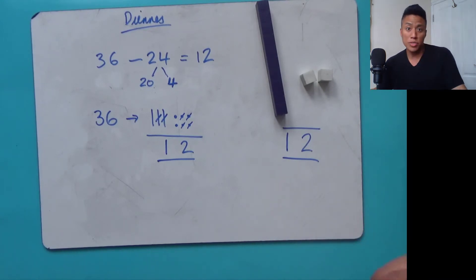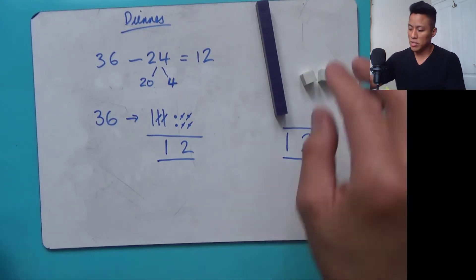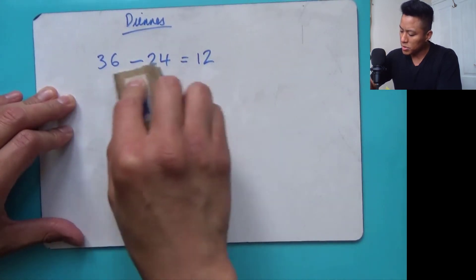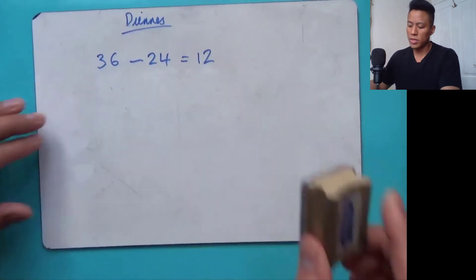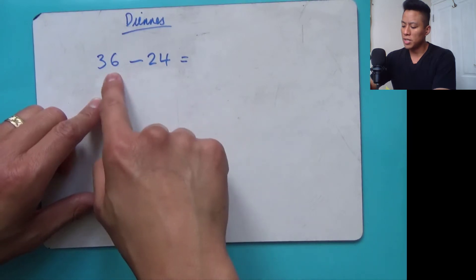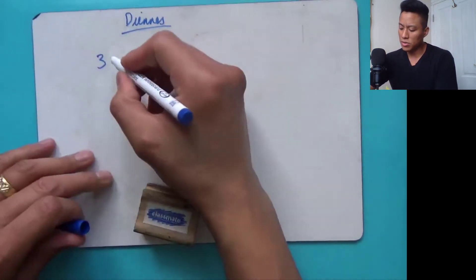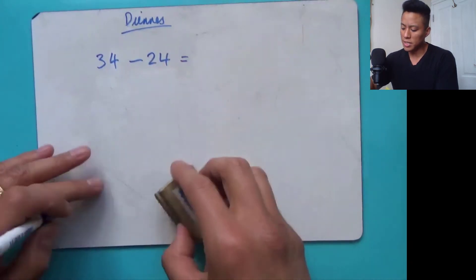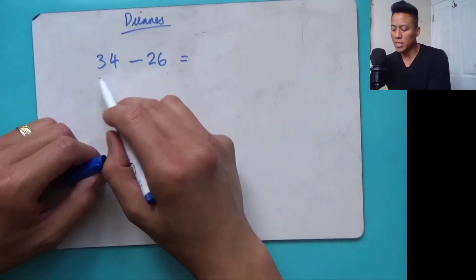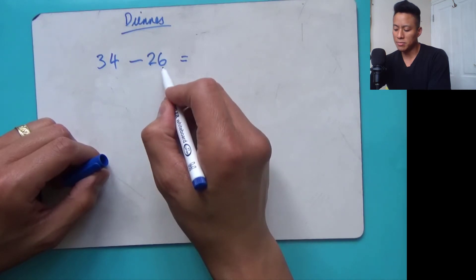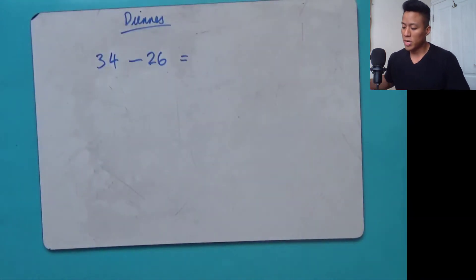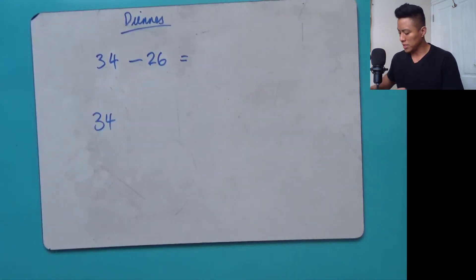Sometimes you might come across a problem when using this method. I'm going to alter these numbers. Instead of 34 and 24, I'm going to swap them so our minuend is now 34 and our subtrahend is 26. The reason why this is a problem is because when I've got my 34 and I want to subtract 26, something happens.